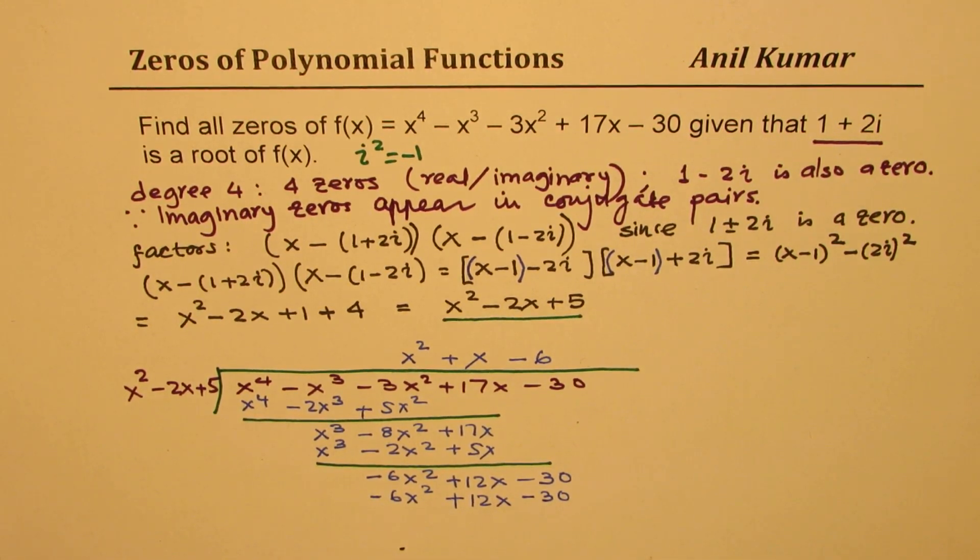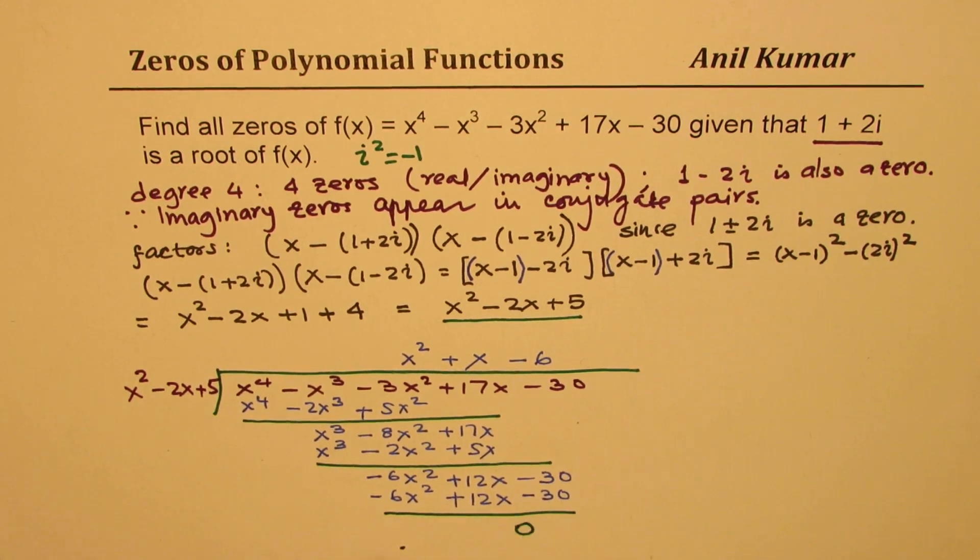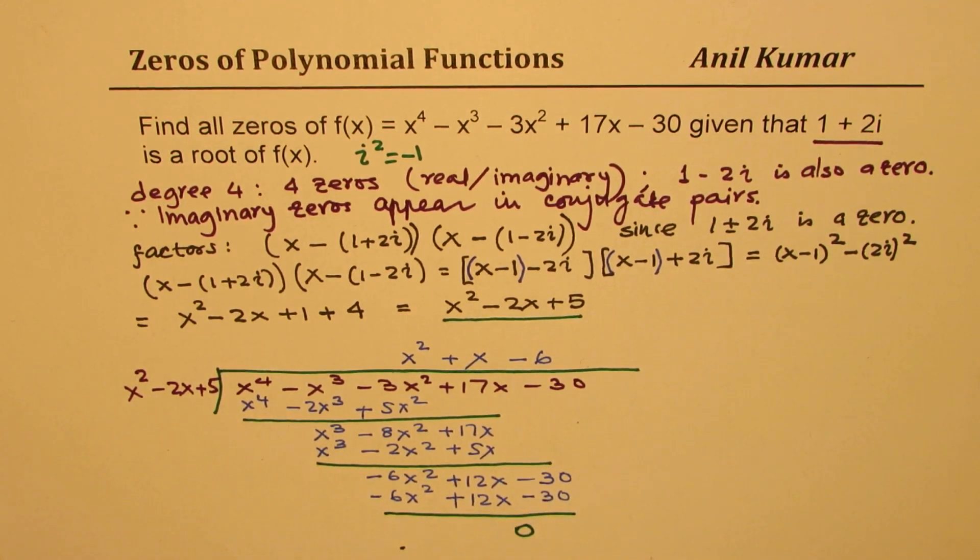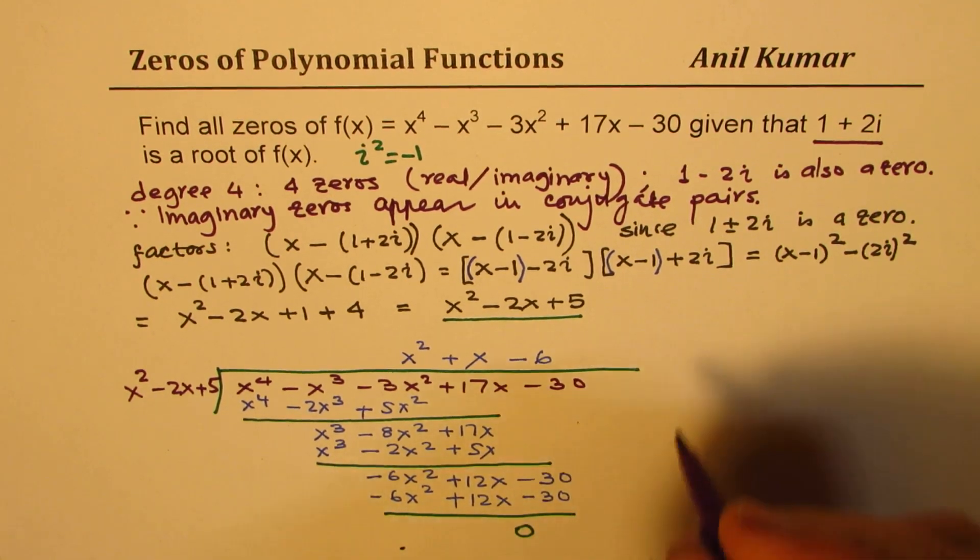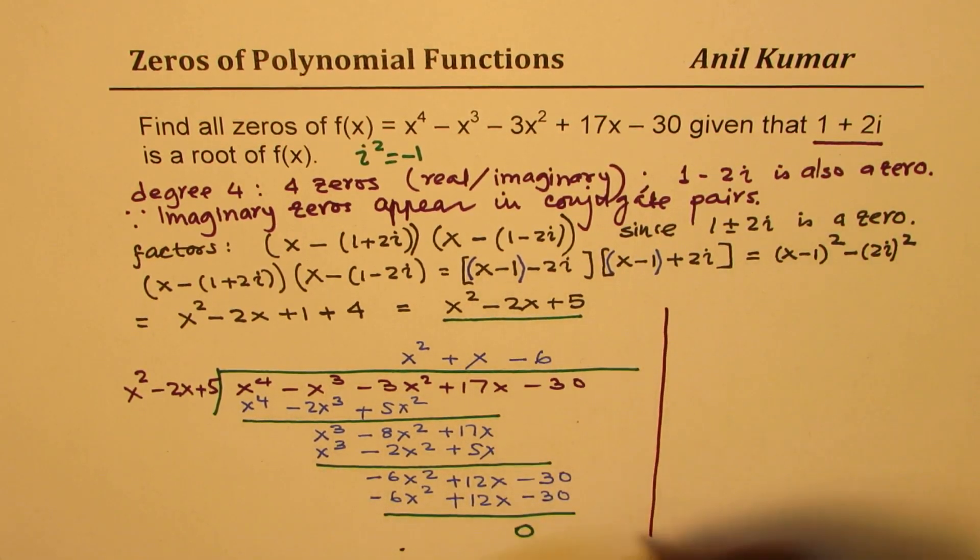It gives us -6x^2, and minus and minus becomes plus 12x, and this becomes -30. And the remainder, as expected, is 0. So we expected this to be a factor.